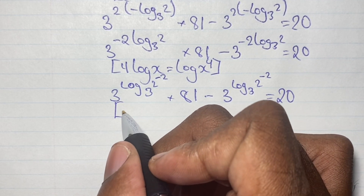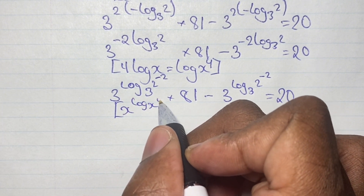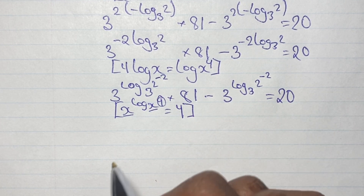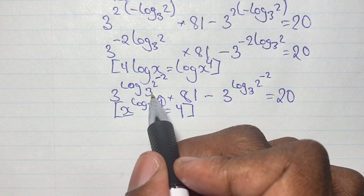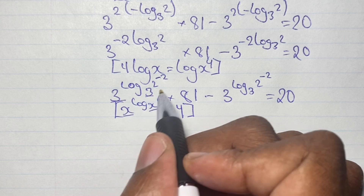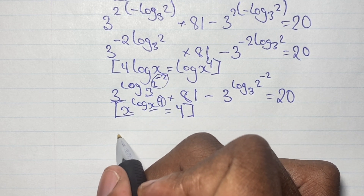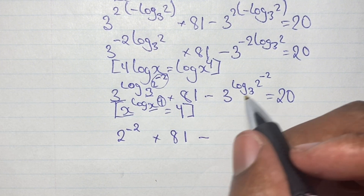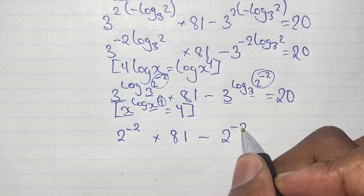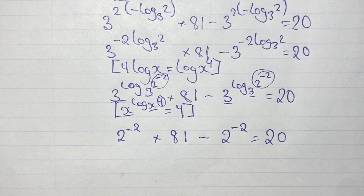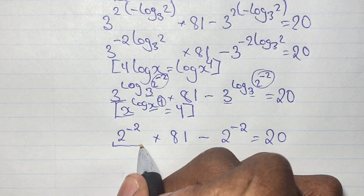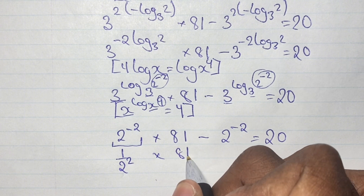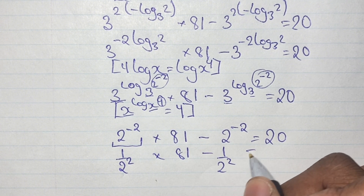Now we apply another logarithm rule: x to the power of log base x of y equals y — whenever we have the same base, the result is y. So we rewrite our equation as 2 to the power of negative 2 times 81, minus 2 to the power of negative 2, all equal to 20. Since 2 to the power of negative 2 means a reciprocal, we have 1 over 2 squared times 81, minus 1 over 2 squared, all equal to 20.